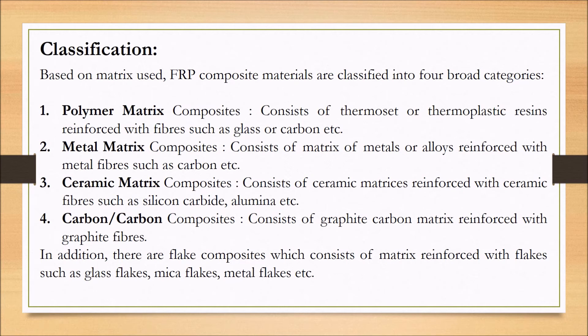The second category is metal matrix composites, where the matrix is a metal or alloy reinforced with metal fibers such as carbon fibers. The third category is ceramic matrix composites, where a ceramic matrix is reinforced with ceramic fibers such as silicon carbide, alumina, etc. The last category is carbon-carbon composites, where both fiber and matrix are carbon materials.